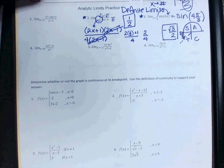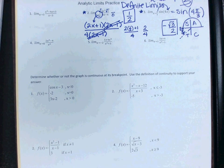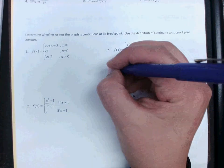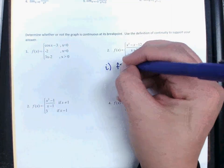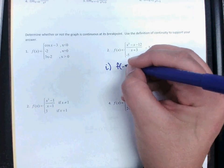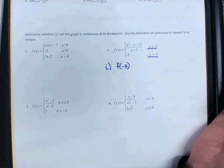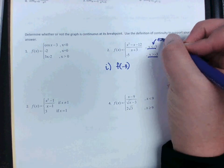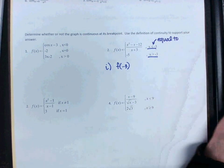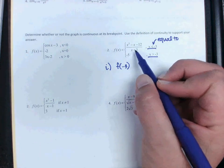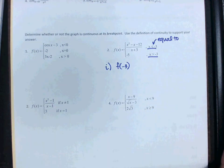We are going to work number 2. Number 2 says determine whether or not the graph is continuous at its breakpoint. Use the definition of continuity. So remember for continuity, step 1 is you need to find f at the breakpoint, which is negative 3. So you should ask yourself, do I plug into the top section or the bottom section? Well, the top has the equal to, so that's where we're going to plug in. Now, the very first time I plug in negative 3 plus 3, I'd get a divide by 0. That's bad. But remember that all of your rules still apply.